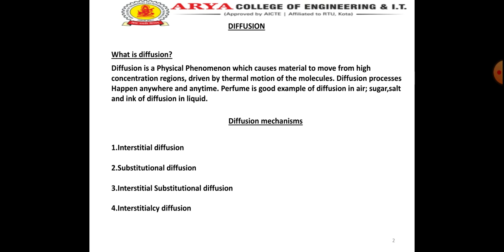There are two main approaches to diffusion theory: the atomistic approach and the continuum approach. In the atomistic approach, a relatively complete picture of diffusion phenomena is obtained. Equations can be found relating macroscopic quantities such as diffusion fluxes to atomic quantities such as atomic jump frequencies. In the continuum approach, the detail of atomic phenomena are ignored and the problem is simplified so that a direct relation between initial and final state can be obtained.